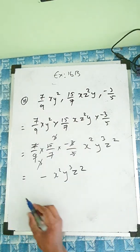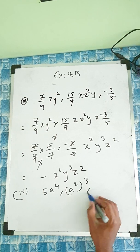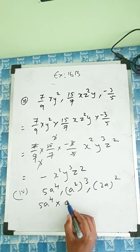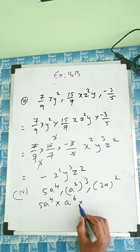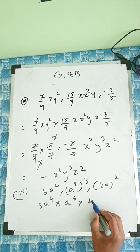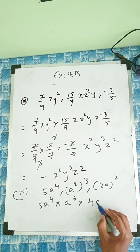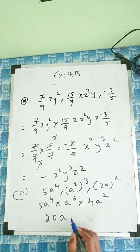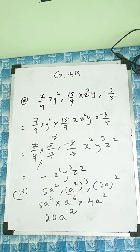One more example: 5a to the power 4 times 2a cubed whole squared times 2 squared. For 2a cubed whole squared: no change to 5a to the power 4, and for the bracket the power multiplies, so a cubed squared is a to the power 6. Then 2 squared is 4. So we have 5 times 4 is 20, and a power: 4 plus 6 is 10, plus 2 is 12. Answer: a to the power 12.